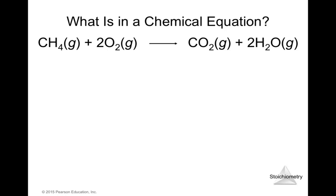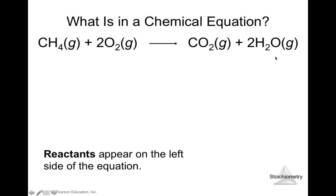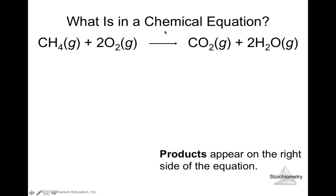Here is another chemical equation: methane plus two oxygen will produce carbon dioxide plus two moles of water. The reactants are always on the left side of the equation, before the arrow, and the products are always on the right side of the arrow.